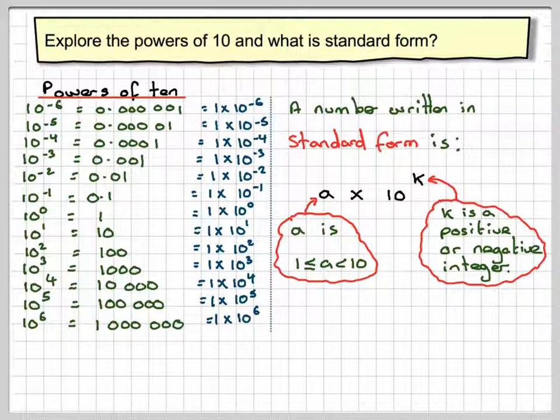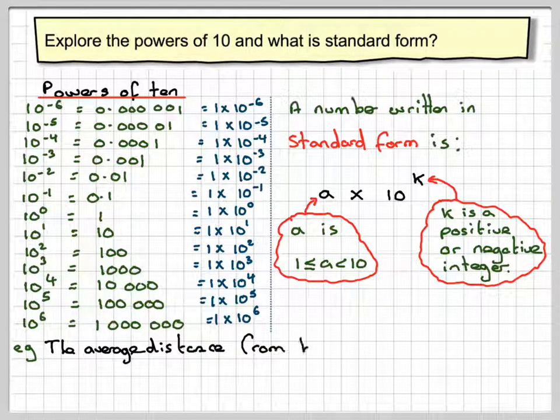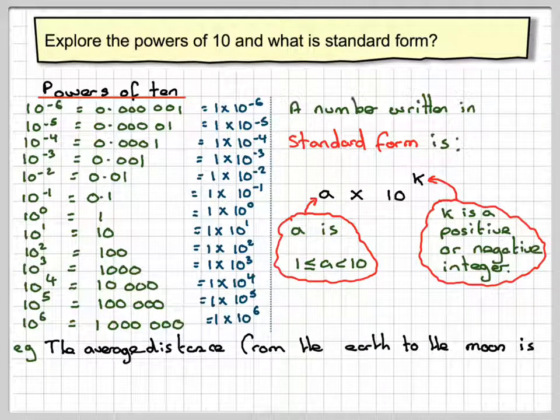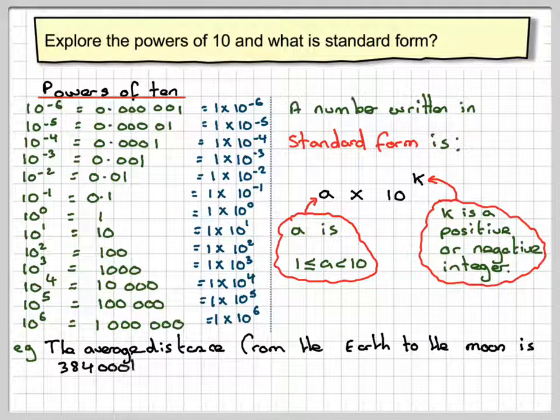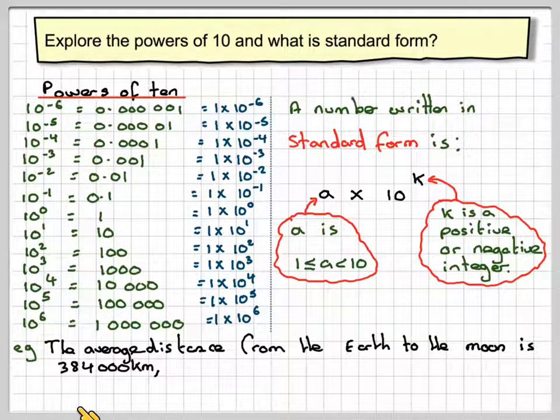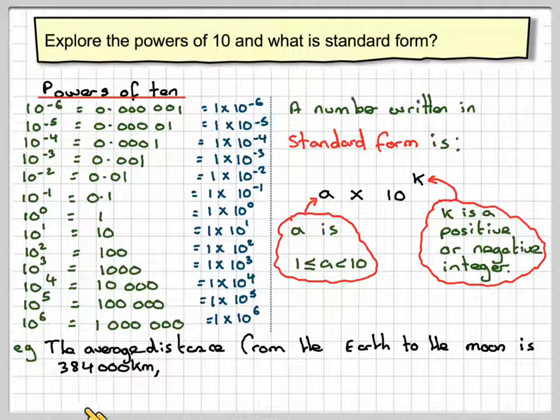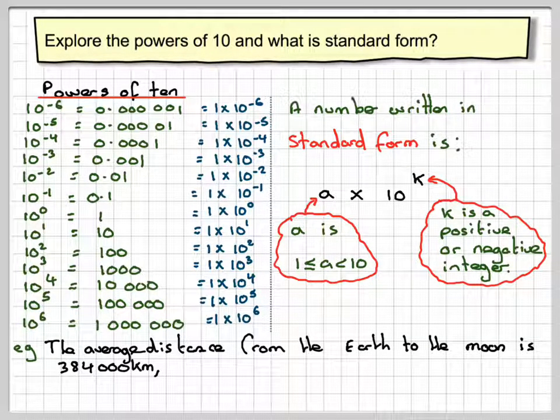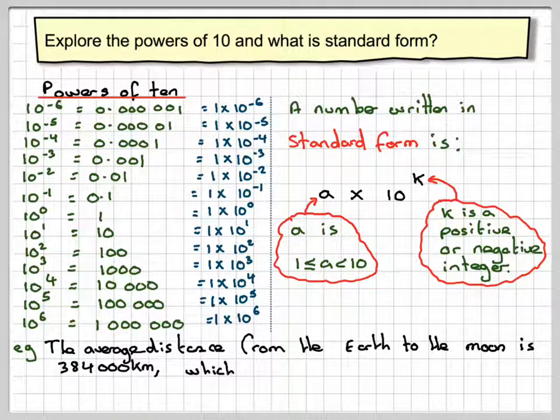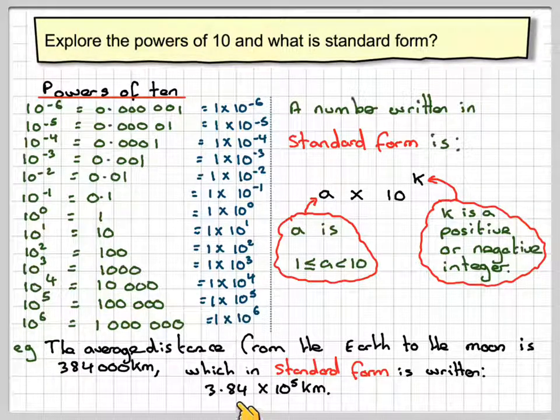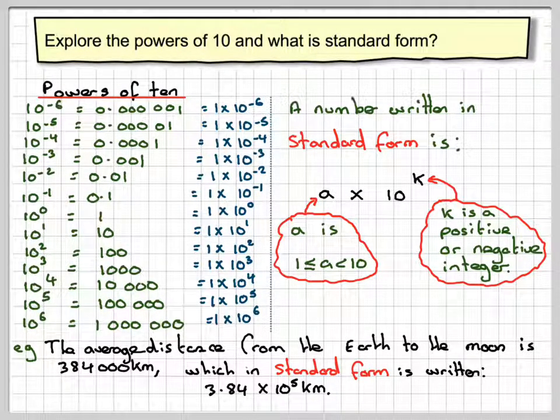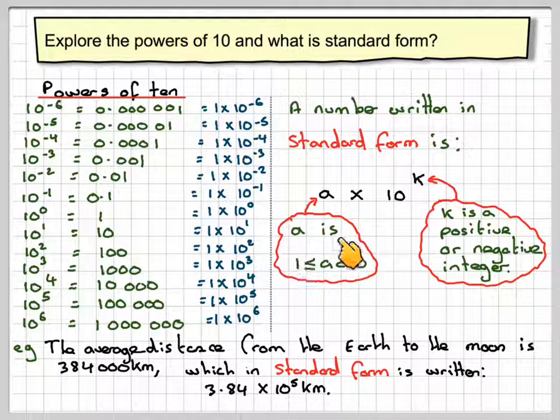Let's look at one example. The average distance from the Earth to the moon is 384,000 kilometers, which in standard form is written as 3.84 times 10 to the power of 5. 3.84 is a number between 1 and 10, and k is a positive integer in this case.